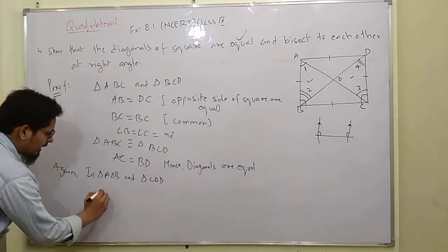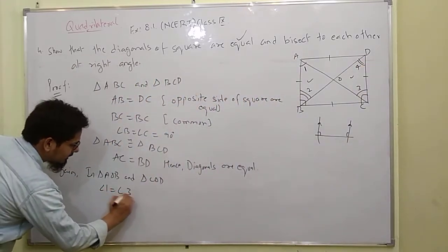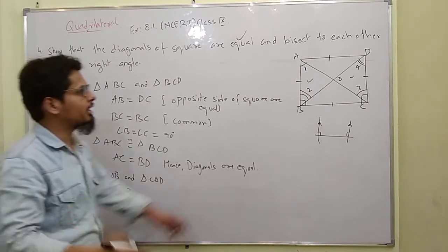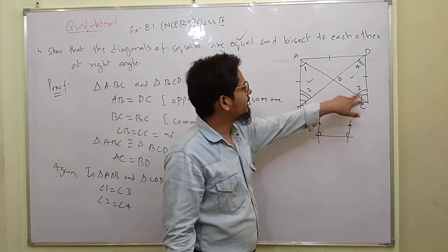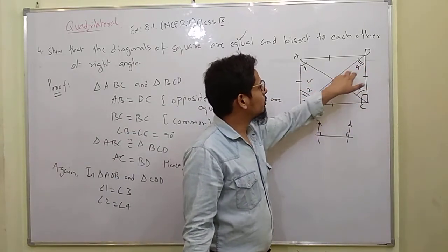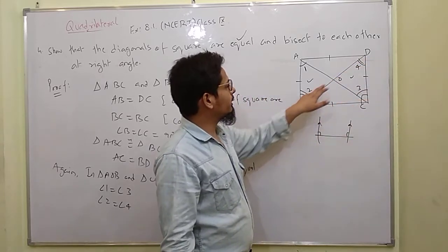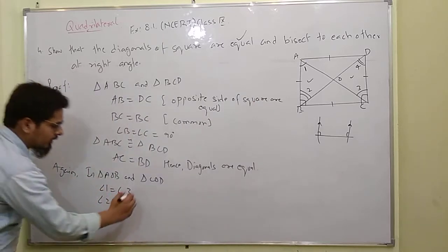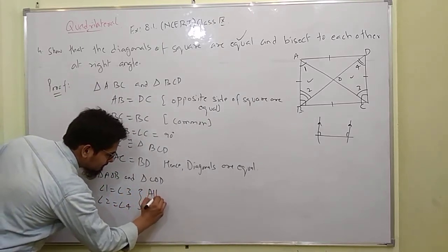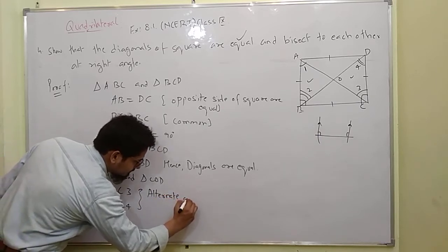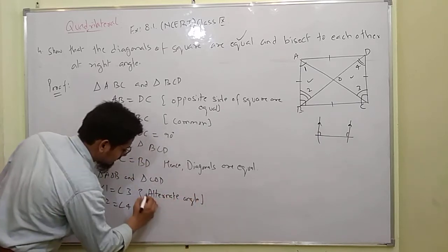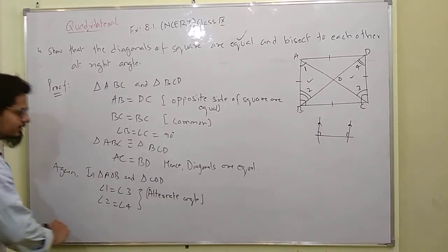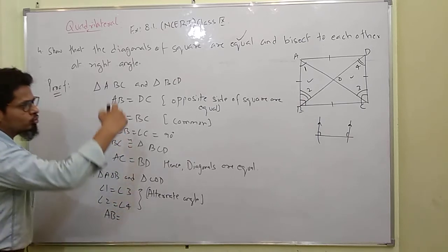So we can say angle 1 is equal to angle 3, and angle 2 is equal to angle 4 — by alternate angles. These two pairs are equal; the reason is the same — alternate angles. And the next point: AP is equal to opposite side C — opposite sides are equal.